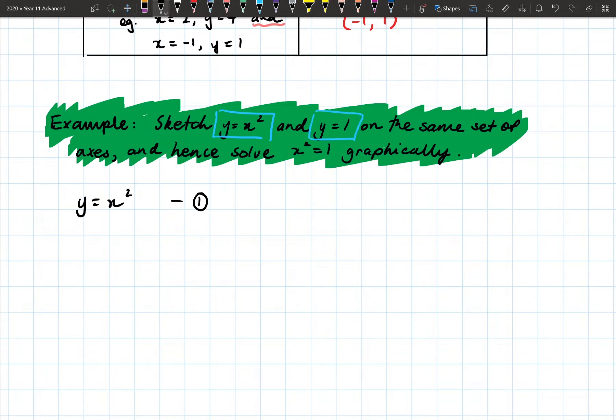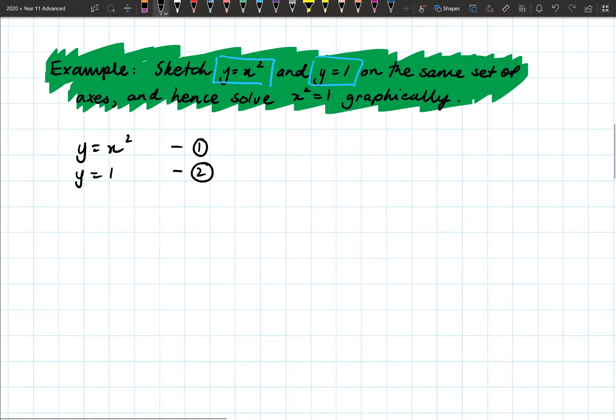So here, example one, sketch y equals x squared and y equals one on the same set of axes and hence solve x squared equals one graphically. Now you have a look, we have two equations here. We've got y equals x squared, so I'm going to write underneath y equals x squared. That's our equation number one. And we've got y equals one over here. Those are our two equations.